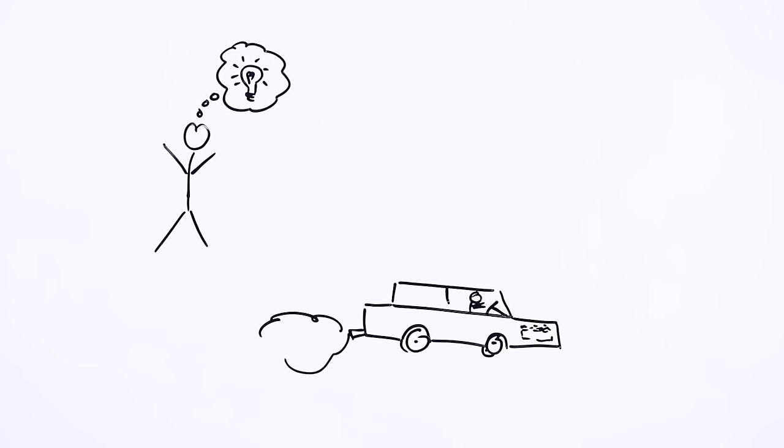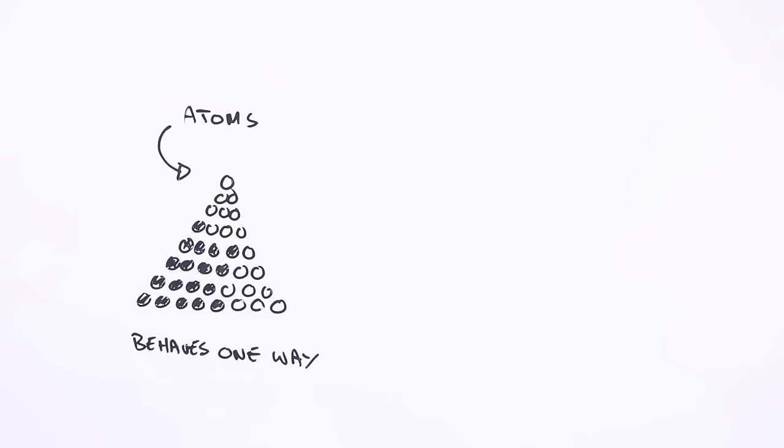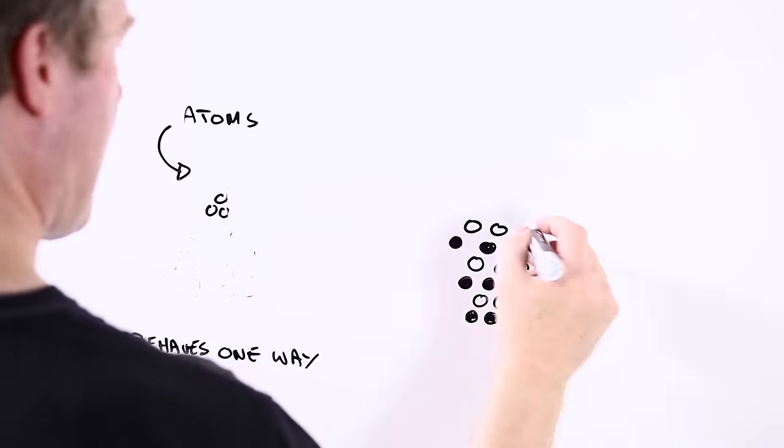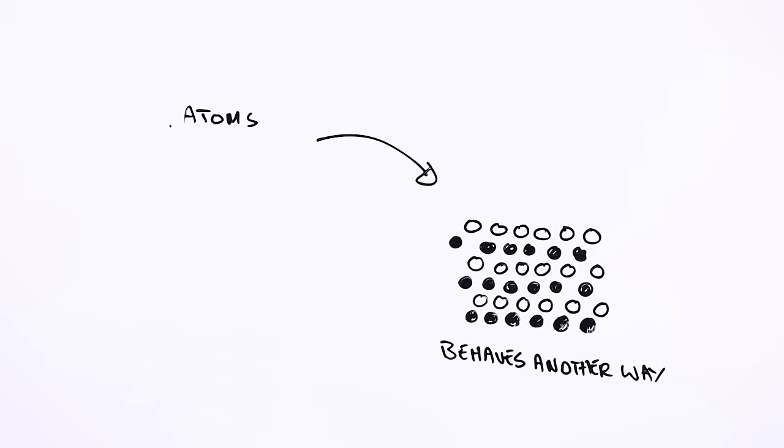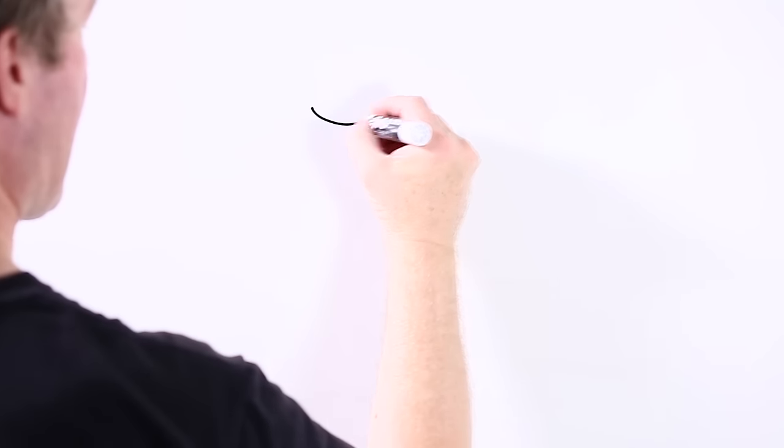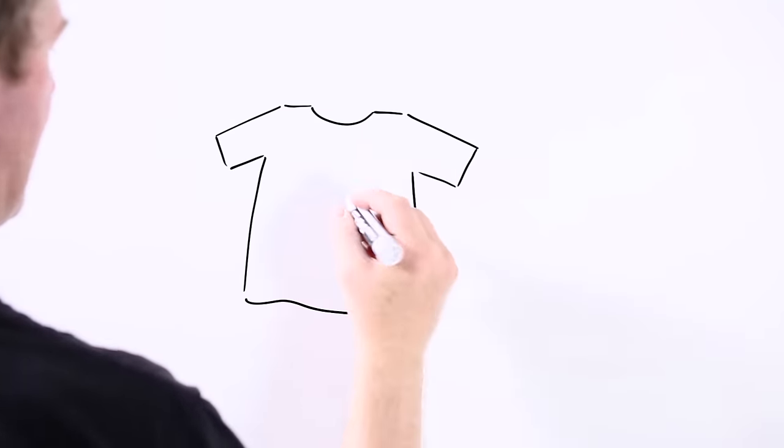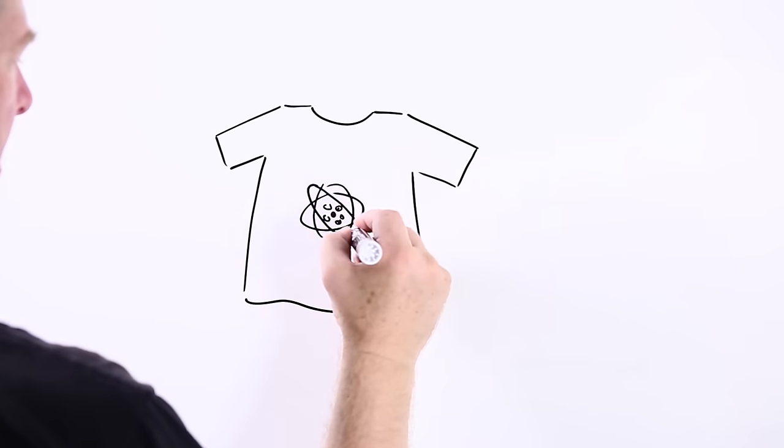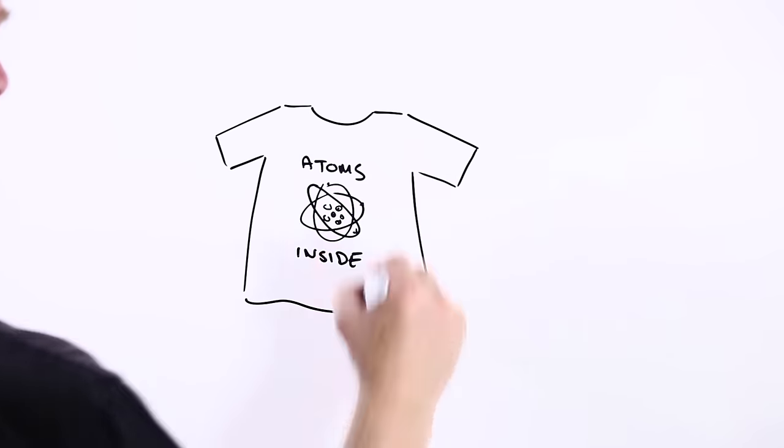Of course, atoms are a bit smaller than the wheels on a car, but the same idea holds. How the different atoms in something are arranged can affect things like how strong or how weak it is, or if it conducts electricity, or if you can see through it, or even what it feels like. In fact, pretty much anything that the stuff around you does, it does because of how all the different atoms it's made of are put together.